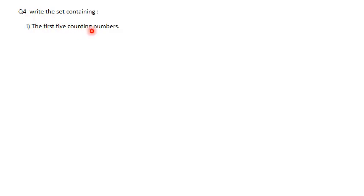Question 4: Write the set containing the first five counting numbers. We give the set a name, say A, in capital letter, then write: A = {1, 2, 3, 4, 5}. Each element is separated by commas, enclosed in curly brackets, and not repeated.